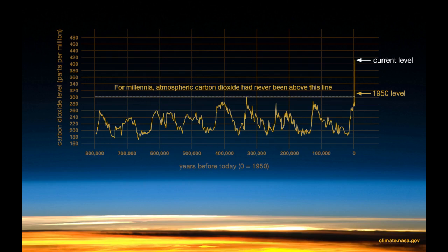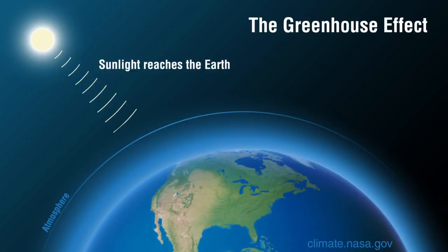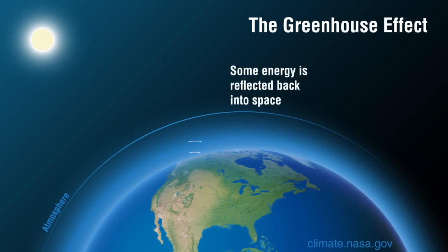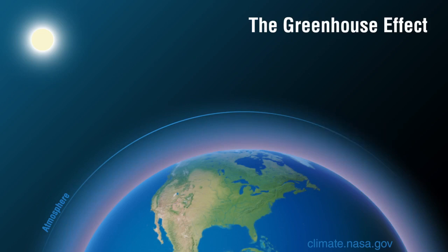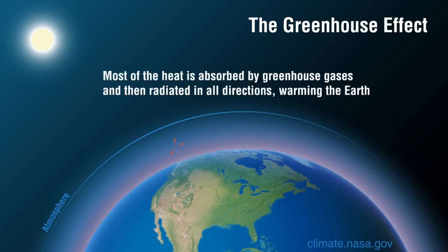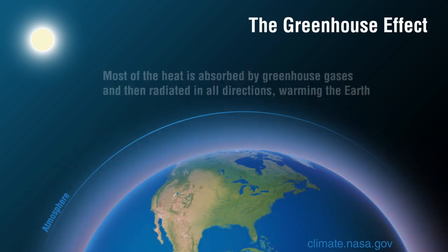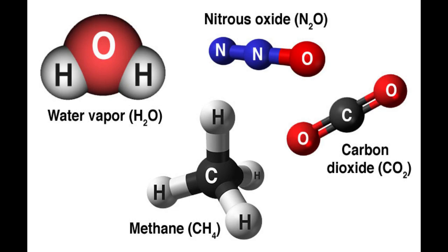Scientists attribute the global warming trend observed since the mid-20th century to the human expansion of the greenhouse effect — warming that results when the atmosphere traps heat radiating from Earth towards space. Certain gases in the atmosphere block heat from escaping. Gases that contribute to the greenhouse effect include water vapour, carbon dioxide, methane, and nitrous oxide.